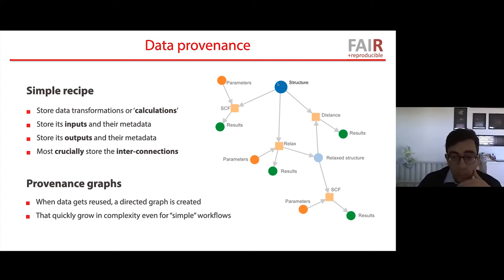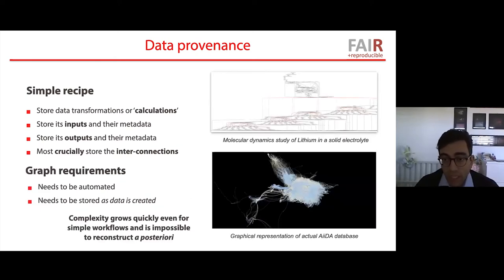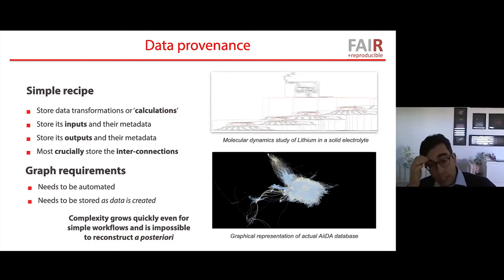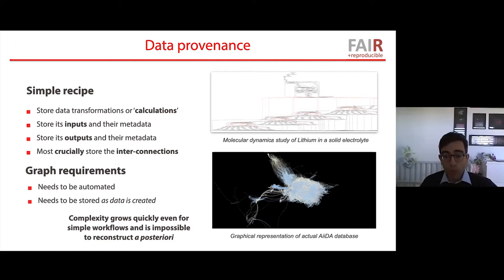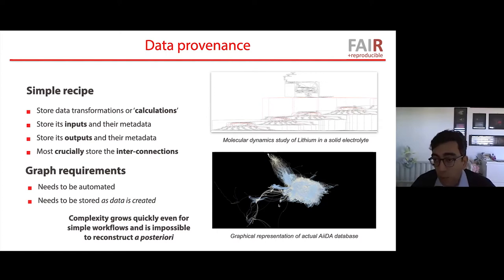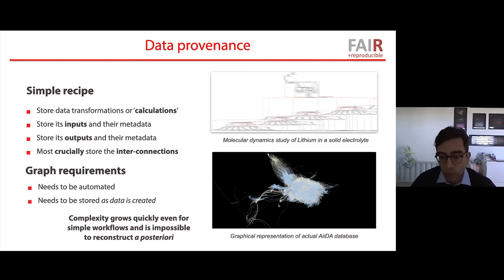That simple graph illustrates the concept, but real provenance graphs created by AiiDA look much more complex — not because we represent things in a complex way, but because that's what material scientists actually do. When you run molecular dynamics mixing DFT with semi-classical methods, you do a lot of pre-processing, run dynamics, and so on. The bottom graph here shows an actual database of basic electronic properties of binary compounds for only around 500 materials — a mid-to-low throughput database — yet the number of connections is already so large it's essentially impossible to reconstruct a posteriori.